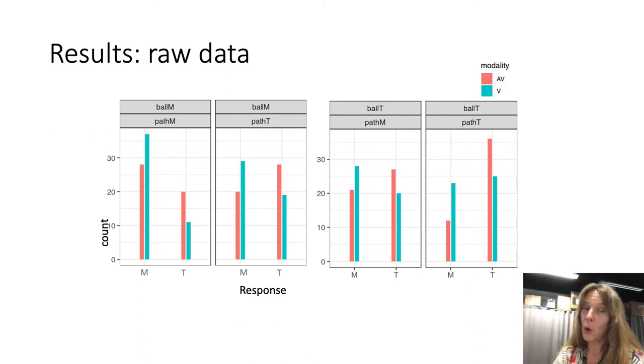In the visual-only condition, it was rather the other way around. We can see that whenever either the path or the ball was of the maluma kind or indeed both, participants would choose a maluma response. So much so that in the one condition where both ball and path were of the takete kind, without sound, participants gave random responses.